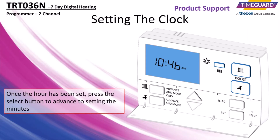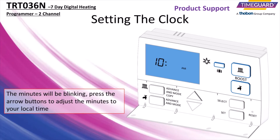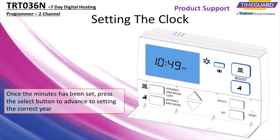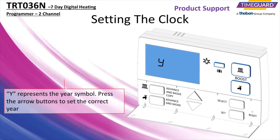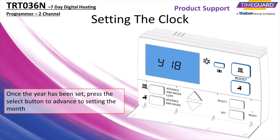Once the hour has been set, press the select button to advance to setting the minutes. The minutes will be blinking. Press the arrow buttons to adjust the minutes to your local time. Once the minutes have been set, press the select button to advance to setting the correct year. Y represents the year symbol. Press the arrow buttons to set the correct year. Once the year has been set, press the select button to advance to setting the month.